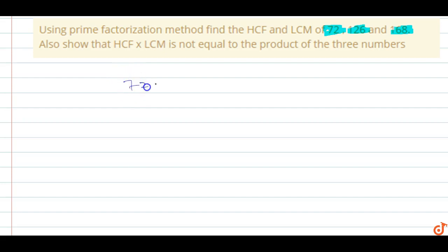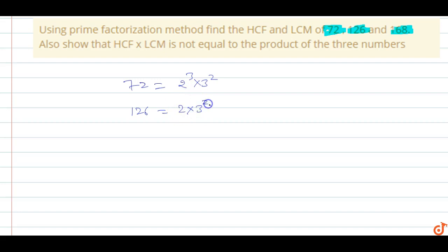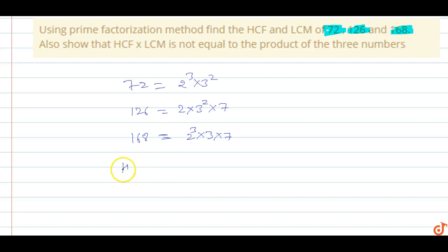The prime factors of 72 are 2 power 3 into 3 power 2, that is 8 into 9. The prime factors of 126 are 2 into 3 power 2 into 7. And 168 is 2 power 3 into 3 into 7.